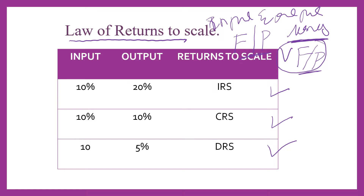If input increases by 10 percent and output increases by 20 percent, it means that increase in output is greater than increase in input. This we call increasing returns, because the returns you get is 20 percent while input increased by only 10 percent. This stage we call increasing returns to scale.